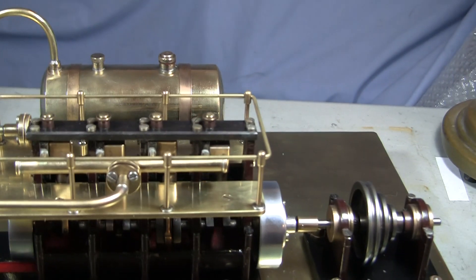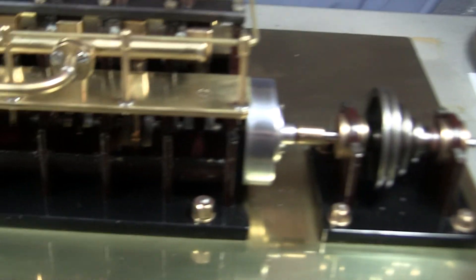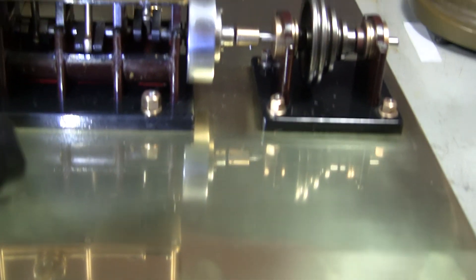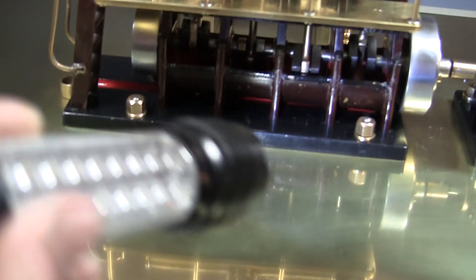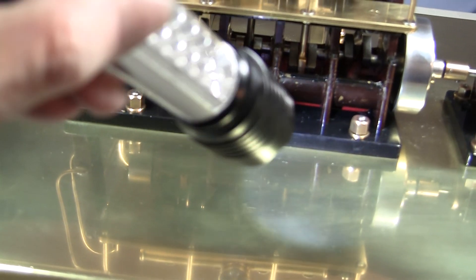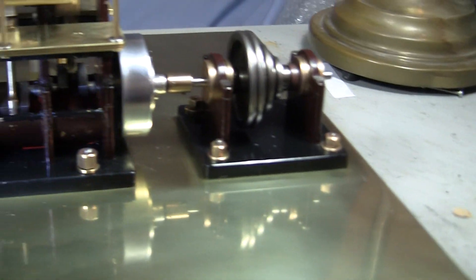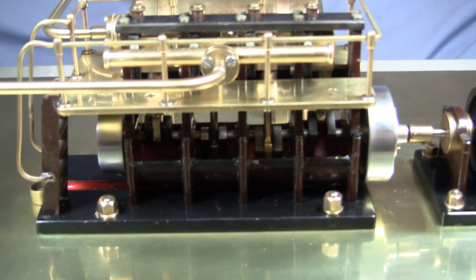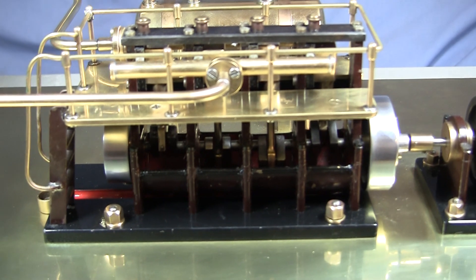The engine itself has a couple other nice features. Underneath the crank is a drain trough. That drain trough goes over here and drains all the oil to a point under the engine.